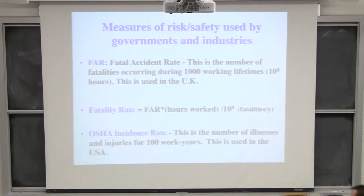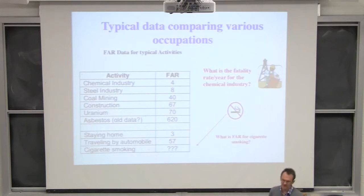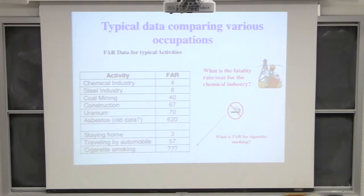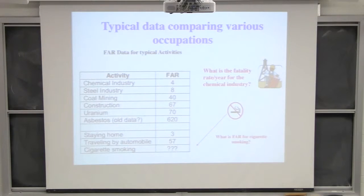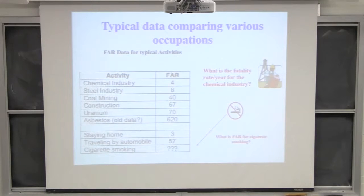Now let's get an idea of the FAR — the fatal accident rate. Take a look at that table. Three people in their lifetime will die from simply staying at home out of a thousand, but only four in the chemical industry. So we actually do a pretty good job already, and we do so because of our knowledge of what unsafe systems can lead to.